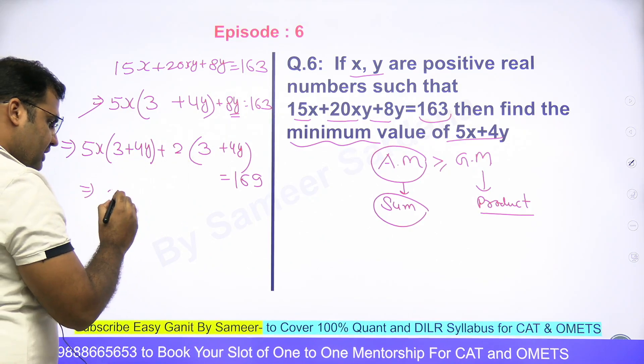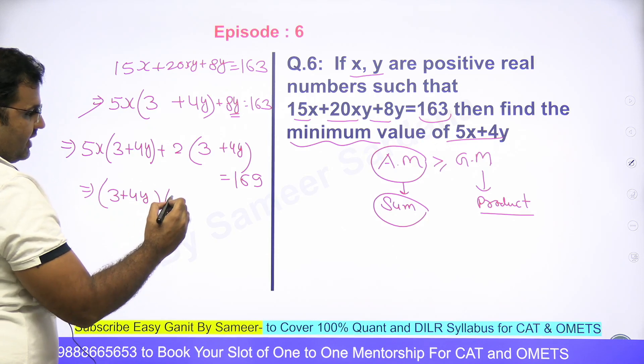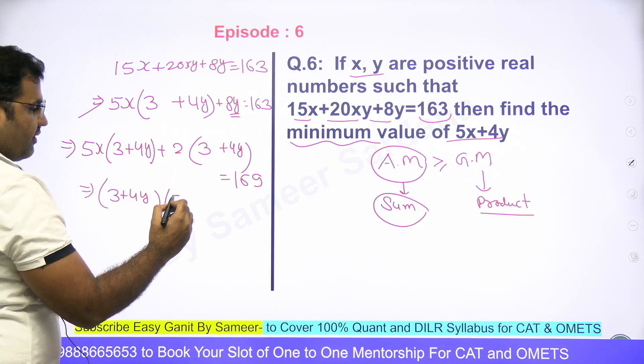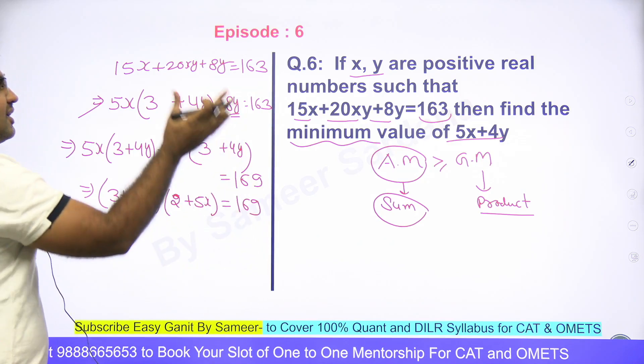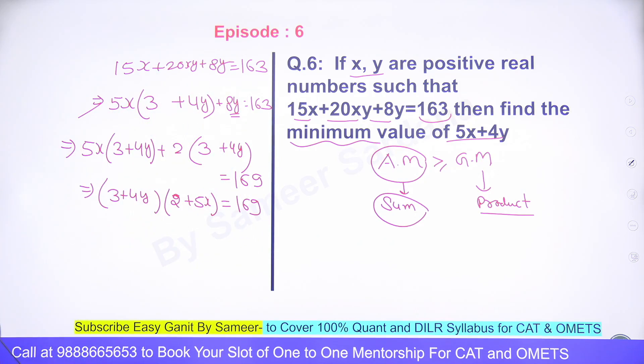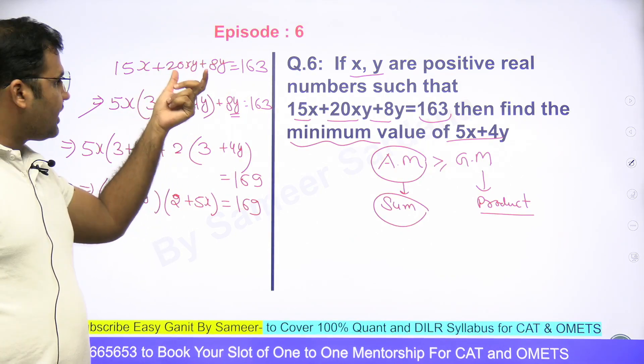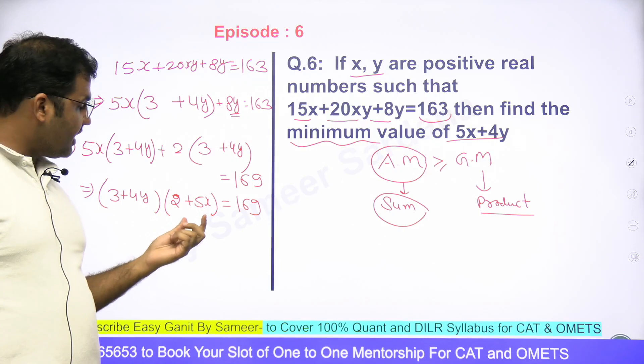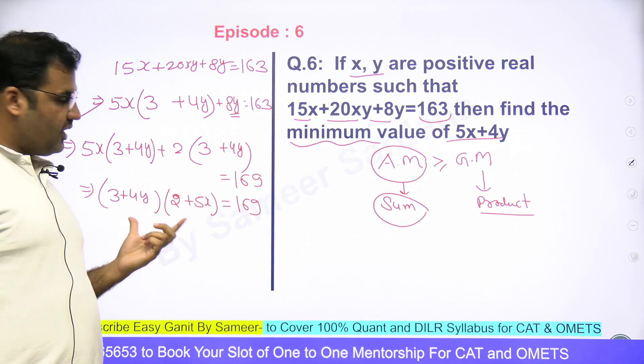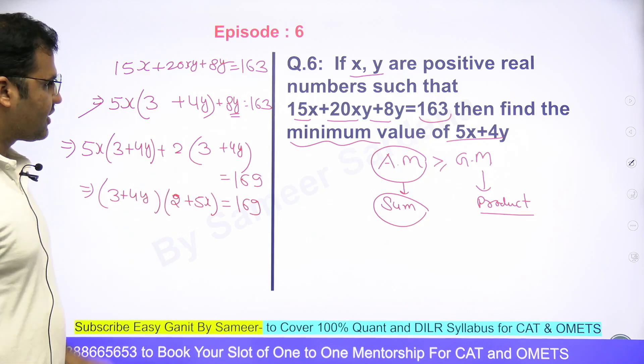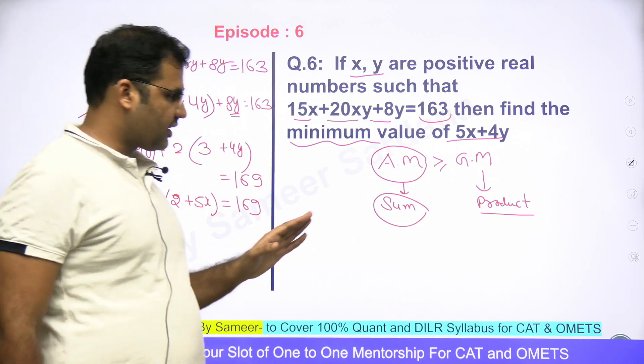And finally, can I take 3+4y common, and then I'll be having another equation of 5x+2. This is equal to 169. See that? Summation form product form me convert ho gaya. Number of factors me bhi aise equations aati hain. Iske number of integral solutions nikalte hain, toh isko pehle product form me convert karte hain. Now this question becomes a question of number of factors. 169 ke factors leke, individual values aap find out kar sakte ho.